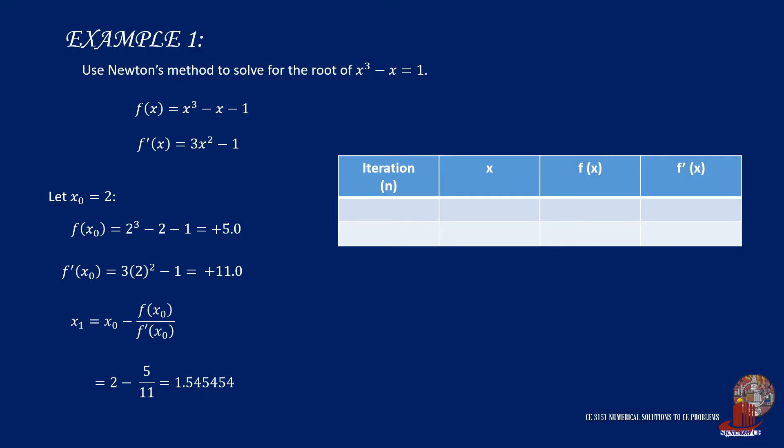Place the values in a table to avoid getting confused later on. Zero iteration uses x as 2, with the corresponding function of x and f' of x values. Then, we also determine the value for x sub 1.